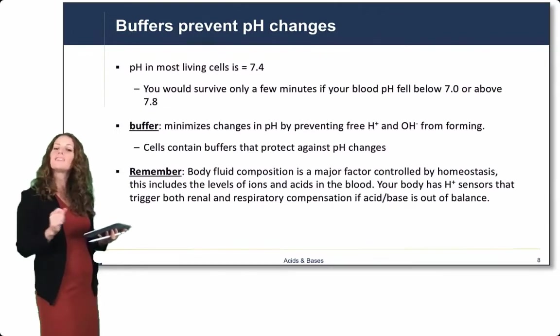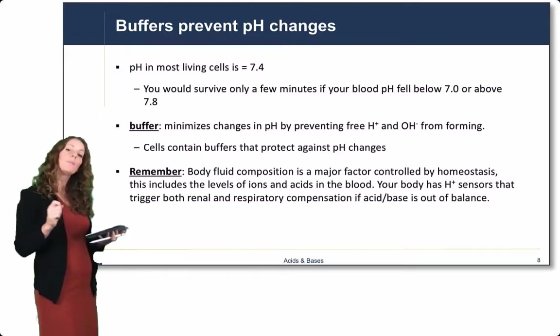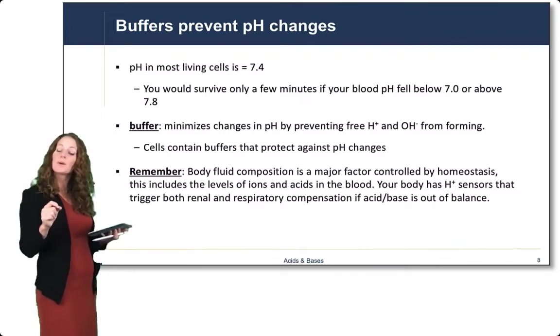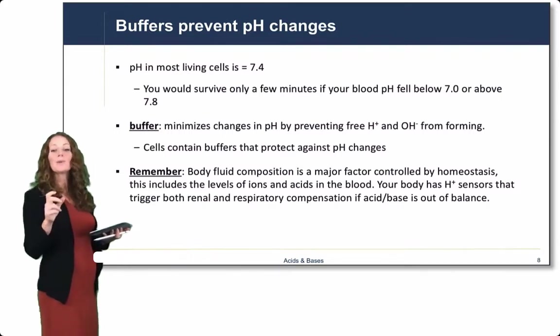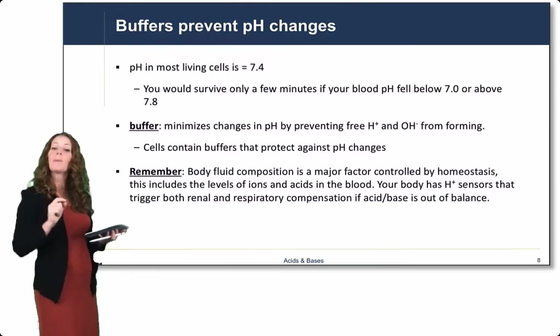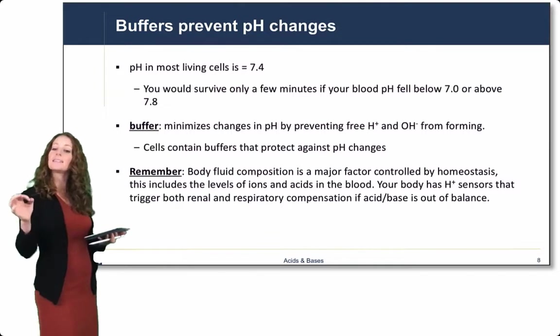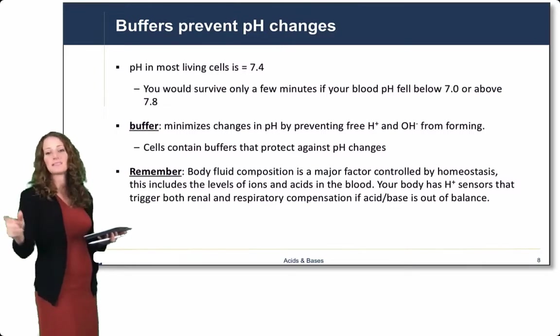So buffers prevent pH changes. You would survive only a few minutes if your blood pH fell below 7 or above 7.8. Buffers help to minimize changes in pH by preventing free protons and free hydroxide ions from forming. Cells contain buffers that protect against pH changes. You will learn about bicarbonate, ammonium, and other buffers in the body. Remember, body fluid composition is a major factor controlled by homeostasis. This includes the level of ions and acids in the blood. Your body has pH sensors that trigger both renal and respiratory compensation if acid-base is out of balance.